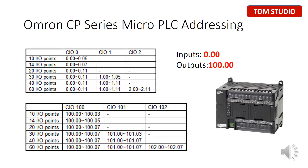Before we get started, it is important to go over some basic knowledge about Omron CP Series Micro PLC Addressing. CP Series Micro PLCs are different from Omron CJ and NCS Medium and Large PLCs. Micro PLCs use Fixed PLC Addressing, not like CJ/NCS which have an I/O Table so you can freely set up input and output PLC addressing. For Micro PLCs, it is necessary to follow the rules of Fixed PLC Addressing.